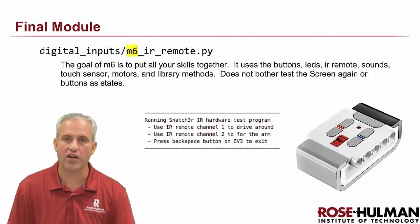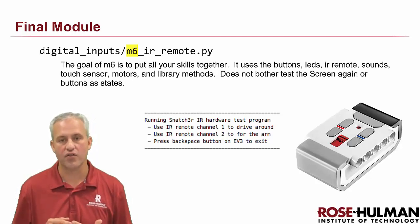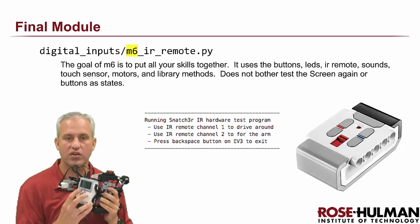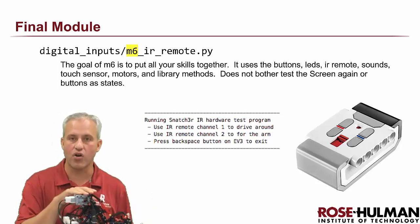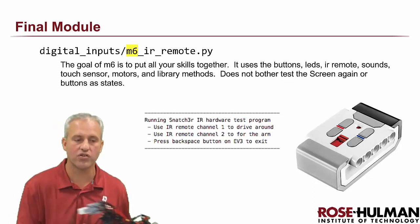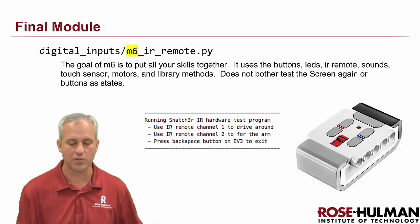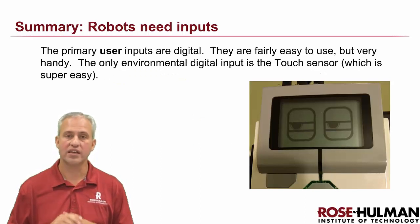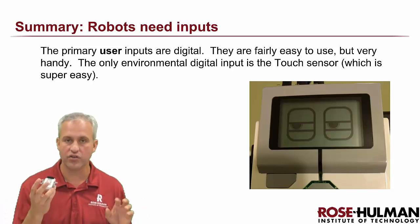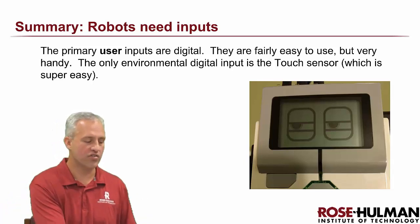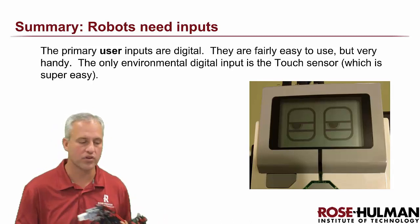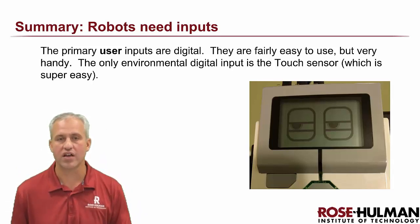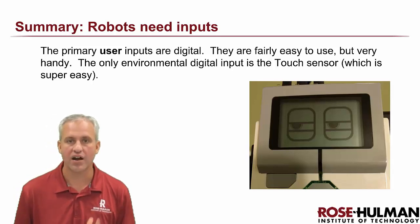Once you've got the touch sensor and arm skill, you're ready for the final project: the IR remote, which ties together digital inputs from the remote and the buttons, LEDs, arm movements, and reviews drive motors from the last unit. The screen isn't covered in the final project but we did plenty with it. By the end of this unit you'll understand digital user inputs like the remote and buttons, the touch sensor, and a few other things. Good luck!